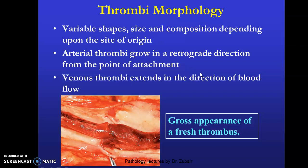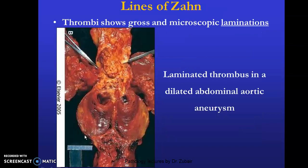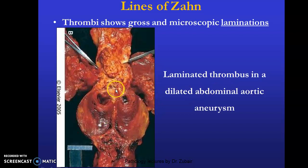Arterial thrombi grow in a retrograde direction from the point of attachment, while venous thrombi extend in the direction of blood flow. You can see a thrombus within the lumen here, with lines of Zahn visible. This is the laminated thrombus in a dilated abdominal aortic aneurysm — the aneurysm being a dilatation of the blood vessel. You can appreciate the different colors, which represent the lamination and lines of Zahn.